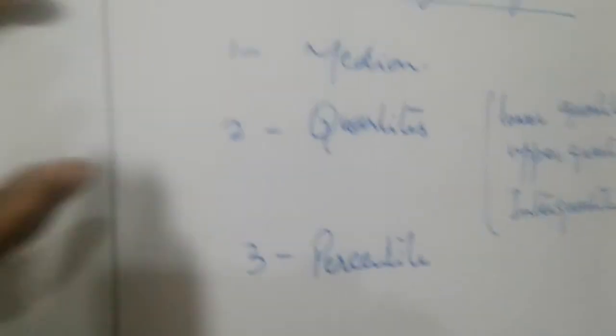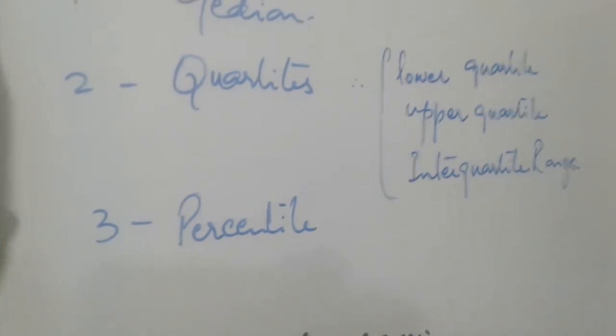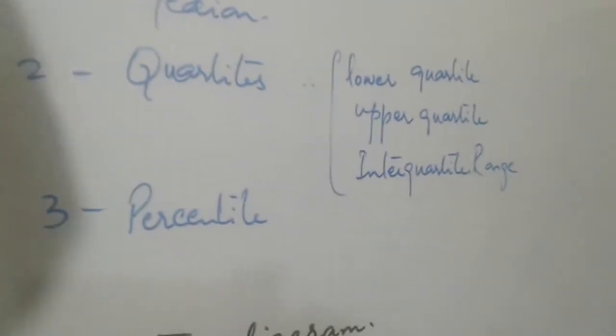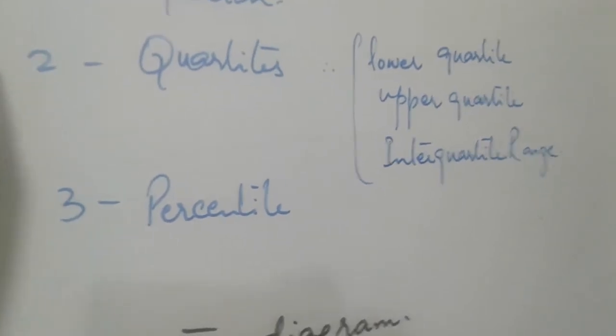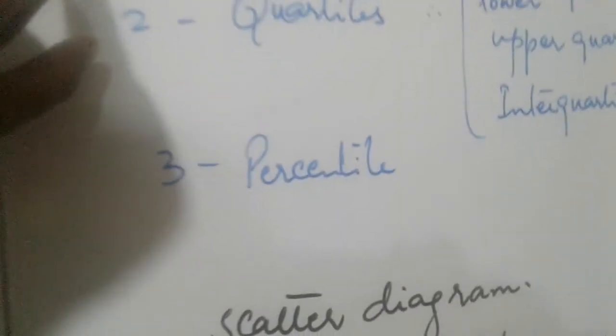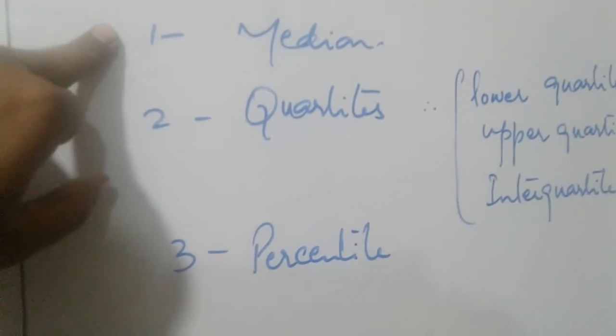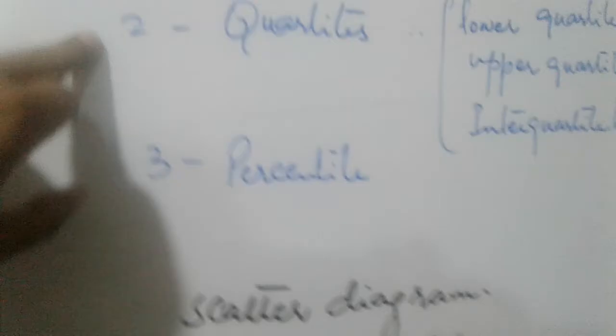Frequency density which is the method. It will be cumulative frequency curve. Cumulative frequency curve we will draw and we will find out the first is the median, the quartiles, the percentile.